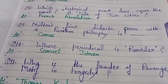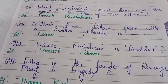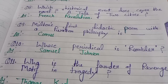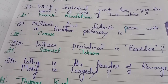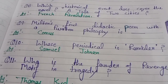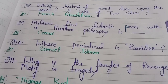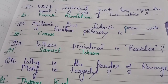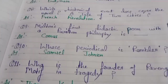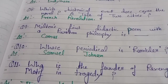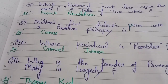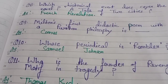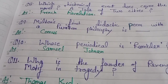Milton's first didactic poem with a Puritan philosophy is? Milton's first didactic poem with Puritan philosophy is Comus. Comus was a masque published in 1634.